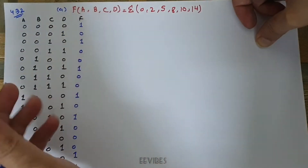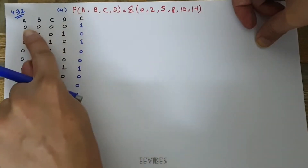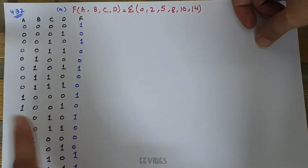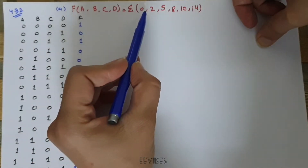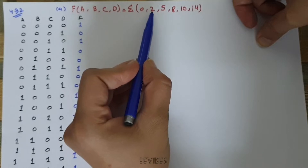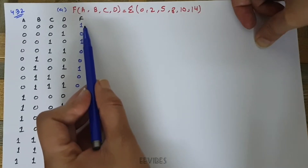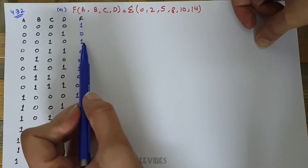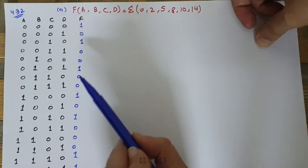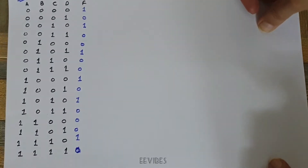Since there are four variables present, I have written all four-variable possible combinations, which are 16 in total. The next step is to mark 1 corresponding to the minterm numbers given. Minterm 0 is equal to 1, minterm 1 is not present so the function value is 0, and same is done for the rest of the minterms: 2, 5, 8, 10, and 14. For minterm 15 the function value is 0.